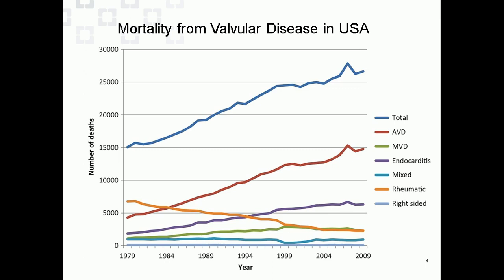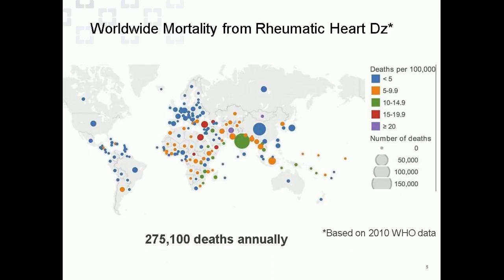Mortality from valvular disease is increasing, predominantly for aortic valvular disease in the U.S., whereas mitral valve disease is relatively stable and rheumatic heart disease is decreasing. This is similar in Europe due to the use of antibiotics for streptococcal infections. However, worldwide mortality related to rheumatic heart disease is significant, with a quarter of a million deaths annually from mitral rheumatic heart disease. Newer techniques have greater potential in non-Western areas.